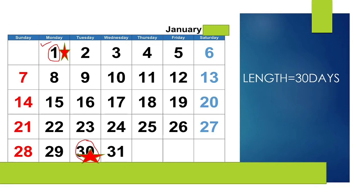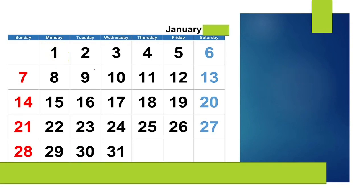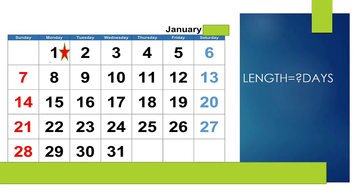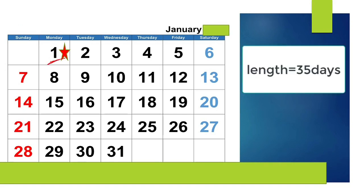From the first day of the previous cycle to the first day of the next cycle tells you the length of your cycle. For example, if your period begins on 1st January and the next cycle begins on 21st January, the cycle length is 21 days. If the next cycle begins on 4th February, the cycle length will be 35 days.